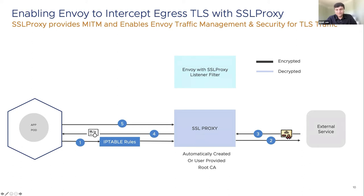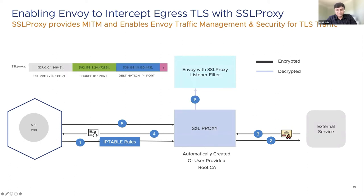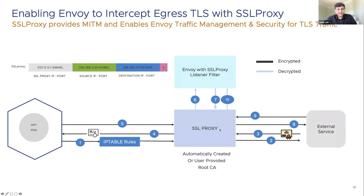When the application sends data to the external service, SSL proxy decrypts it and forwards the decrypted data to OnWise using the SSL proxy protocol. OnWise receives the decrypted traffic, provides observability and processing, then sends the traffic back to SSL proxy at the IP and port specified in the SSL proxy header. SSL proxy re-encrypts and forwards it to the backend server. Return traffic follows the same path: SSL proxy receives the response, decrypts and sends to OnWise, OnWise processes it, sends it back to SSL proxy, which re-encrypts and returns it to the application.